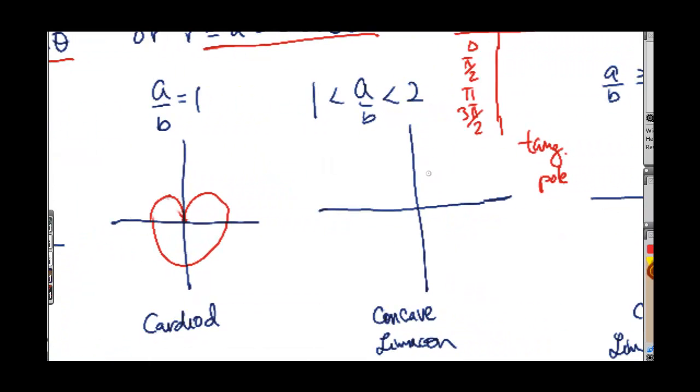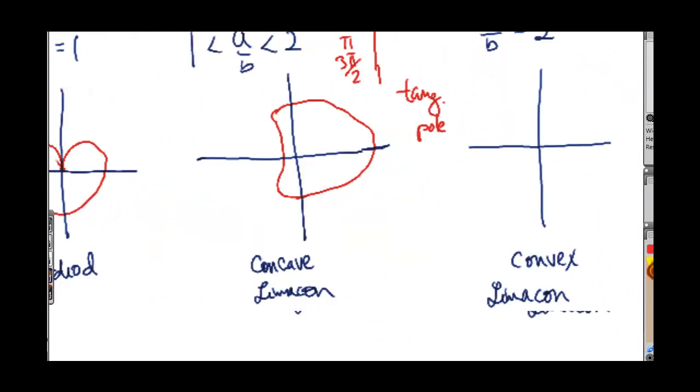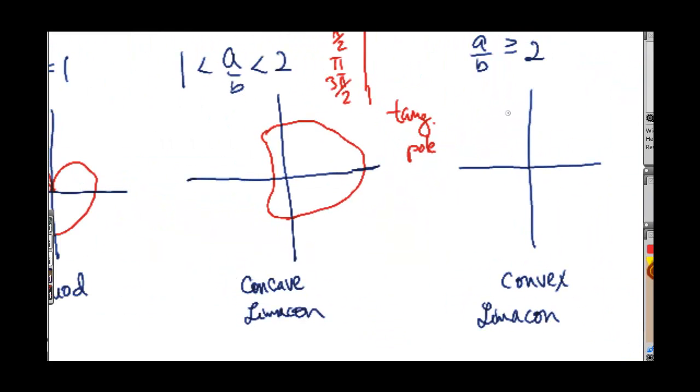And then here, we're going to have a concave limaçon. So it's going to look something like that. And then here, we're going to have a convex one. And it's going to roughly look something like that. And as you can see, these two right here will not have the tangents at the pole because they never touch the origin there.